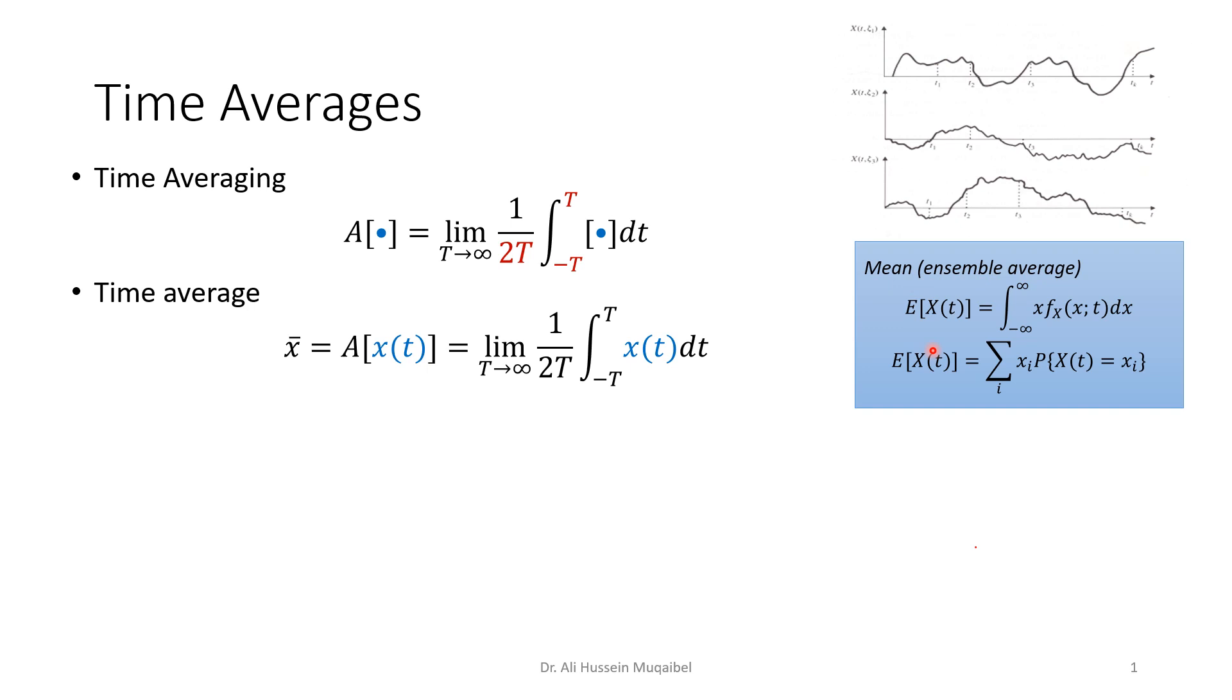We can also find the time auto-correlation. We have defined the auto-correlation, which is the expected value of x times x at different times. Here, the time auto-correlation, instead of the expected, we use A to reflect the time. We take one of these examples and compare it with a shifted version of it by multiplication and integration.